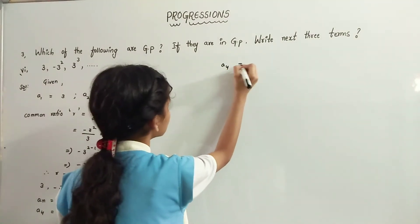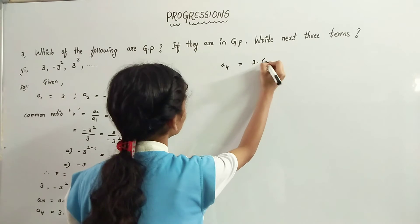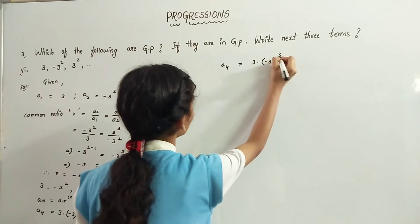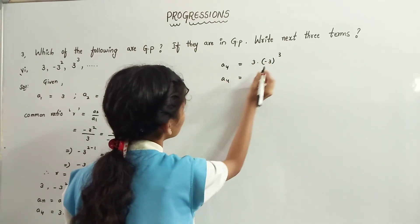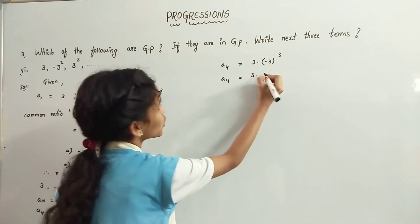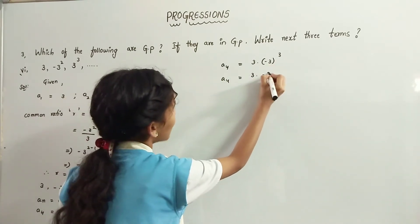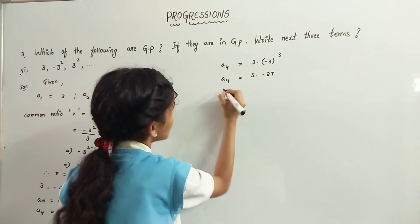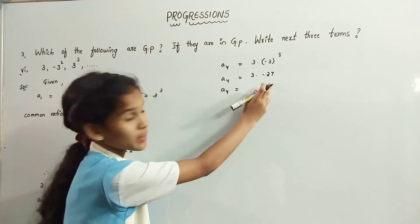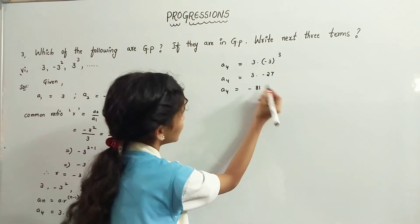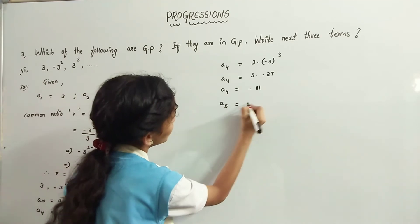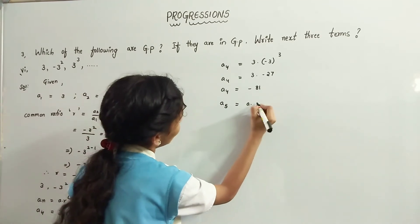A4 equals 3 into minus 3 cubed. Minus 3 cubed is minus 27. Therefore A4 equals 3 into minus 27, which equals minus 81.